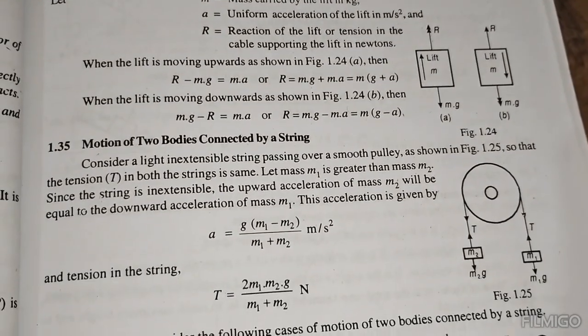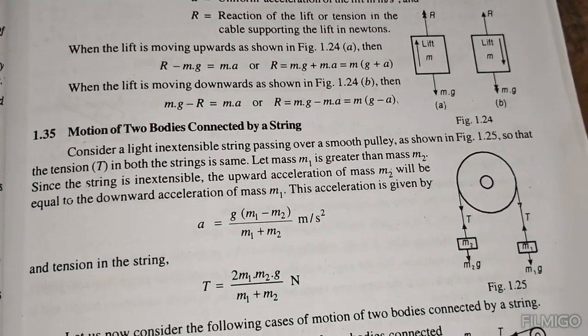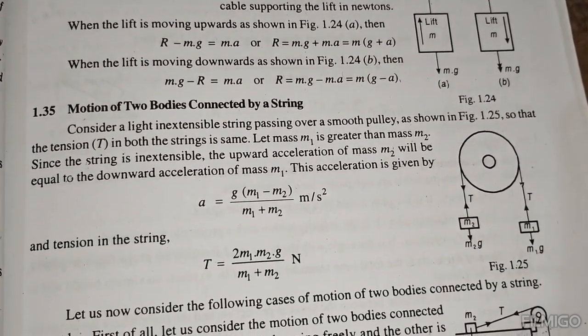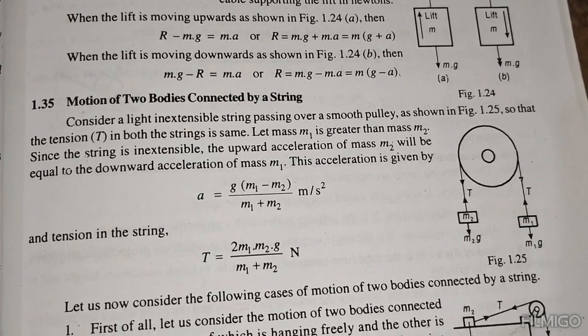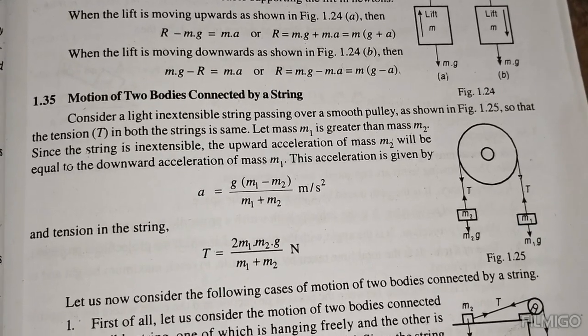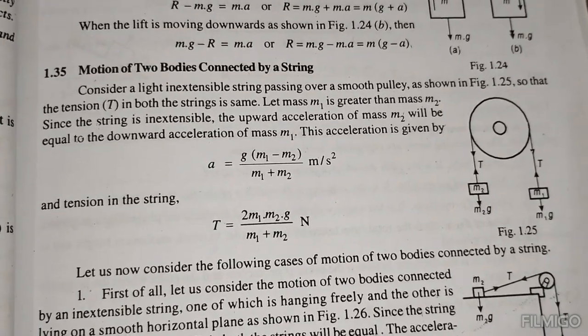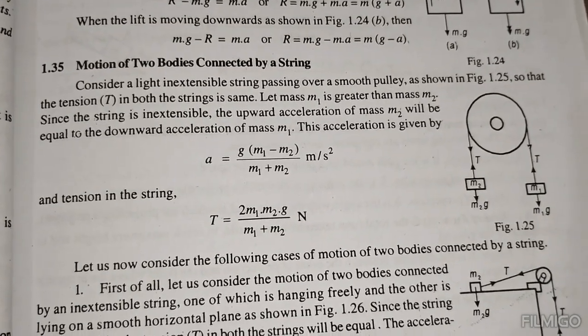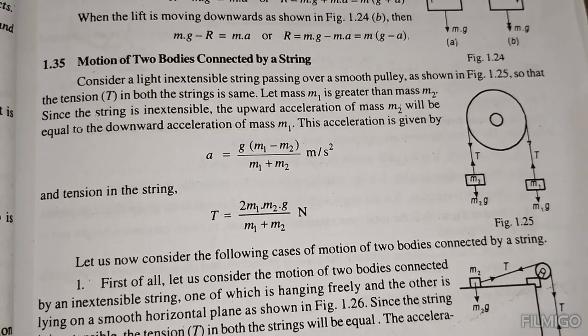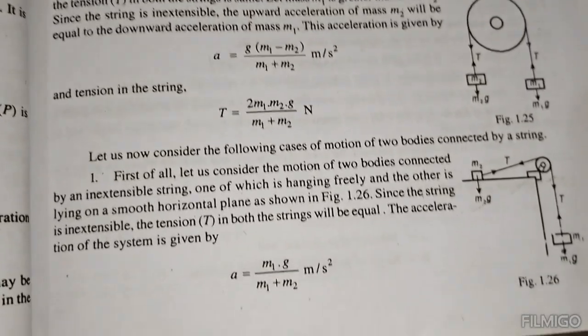For two bodies connected by a string over a pulley, the acceleration is a equals m1 minus m2 divided by m1 plus m2, times g. The tension in the string is T equals m1 times m2 times g divided by m1 plus m2.